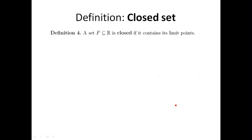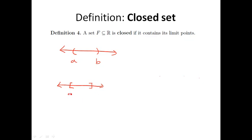Now we have the intuition that limit points are things which are realizable as a sequence of elements inside a set. We can now define closed: a set F is closed if it contains all of its limit points. As two examples to compare, we have the open interval (a, b) and the closed interval [a, b]. What are the limit points of the open interval (a, b)? Well, certainly everything within the closed interval [a, b] is a limit point.